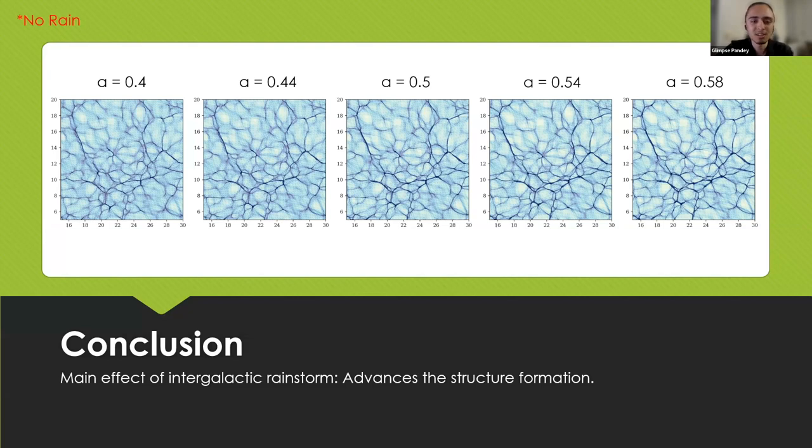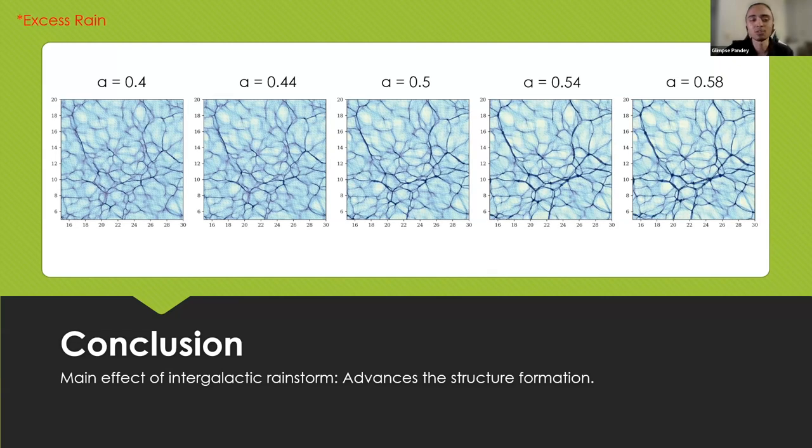This is the graphic of the evolution with no rain. This one is zoomed in. As we can see, this starts at a equals 0.4 and ends at a equals 0.58. This is the density fields throughout the rainstorm, effectively throughout the duration that we implemented the initial rainstorm, although this one is for no rain.